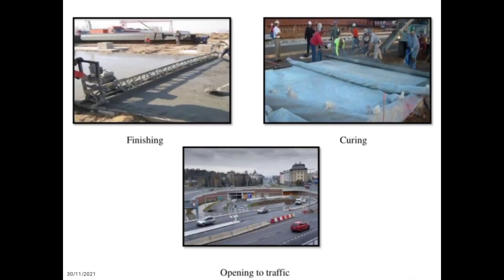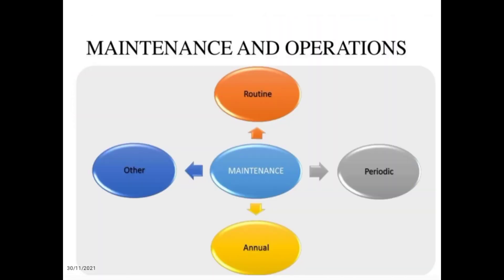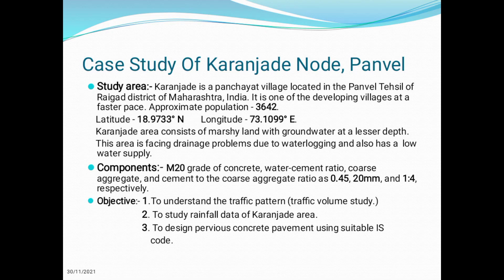Maintenance of the permeable pavement includes periodic maintenance such as leaf blower and truck sweeping due to temperature changes mainly in winter. Street sweepers, which can be mechanical or vacuum, are used annually for deep cleaning using chemicals and pressure washing. Other maintenance includes oil and grease stain removal.